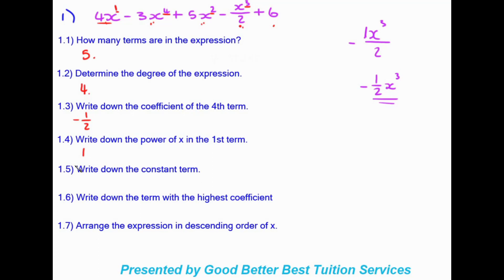Question 1.5 says write down the constant term. The constant term is just a number completely by itself — a number without a variable or power. We can clearly see that is our positive 6, so we write in 6 as our answer.